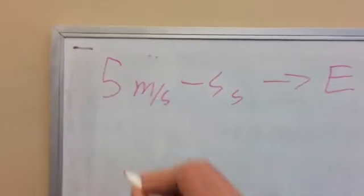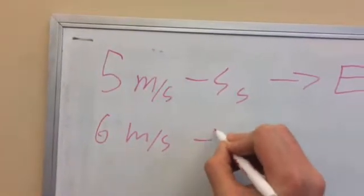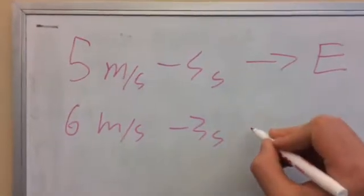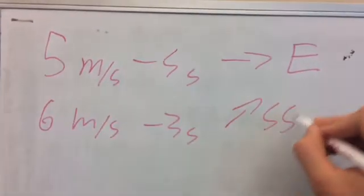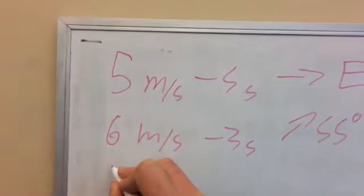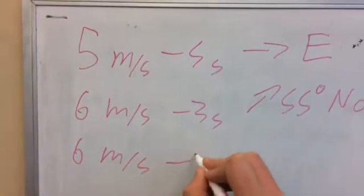The second one is going to be 6 meters a second for 3 seconds heading 55 degrees north of east. The third one again is going to be 6 meters a second for 3 seconds.